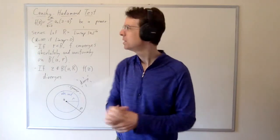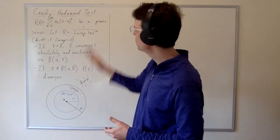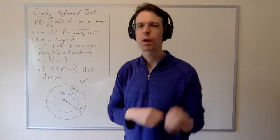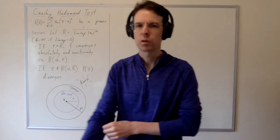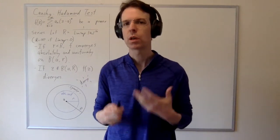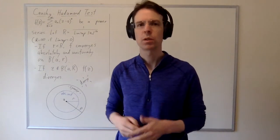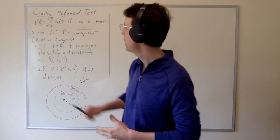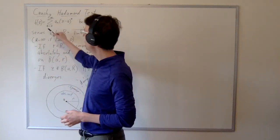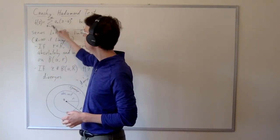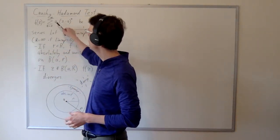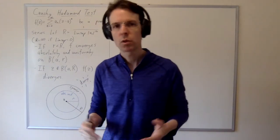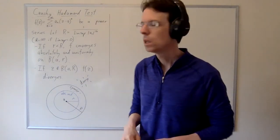I'm excited today to tell you about the Cauchy-Hadamard test, which is a very powerful tool for describing the region on which a complex power series converges. So let's say we have a power series f of z, that's a summation n equals 0 to infinity, a_n times (z minus a) to the n — so any arbitrary power series.